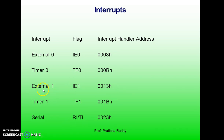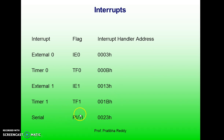Two interrupts are set aside for external hardware interrupts, having vector addresses of 0003H and 0013H in the interrupt vector table, assigned to INT0 and INT1 respectively. Coming to the serial communication interrupt, which has both RI and TI, the interrupt handler address is set as 0023H.